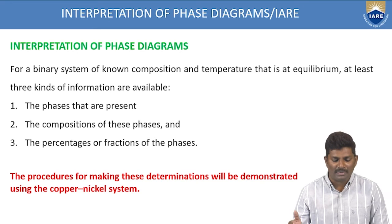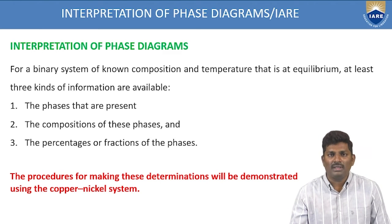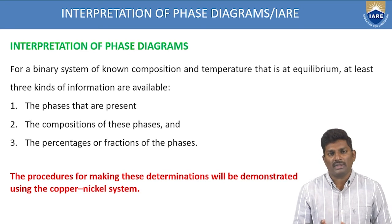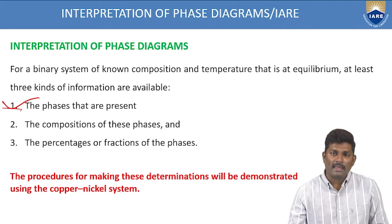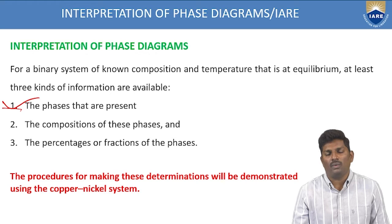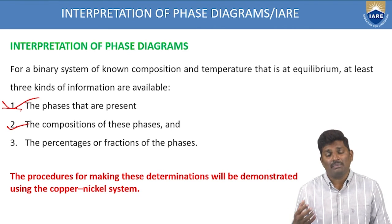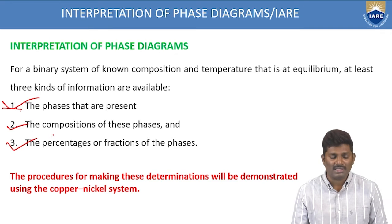From the binary system, three pieces of information are available. First is the phases that are present — whether solid, liquid, or gaseous. Second is the composition of these phases — for example, what is the composition of copper and nickel at a particular temperature. Third is the percentage of fractions of the phases — how much percentage we get in terms of composition and phase with respect to temperature.